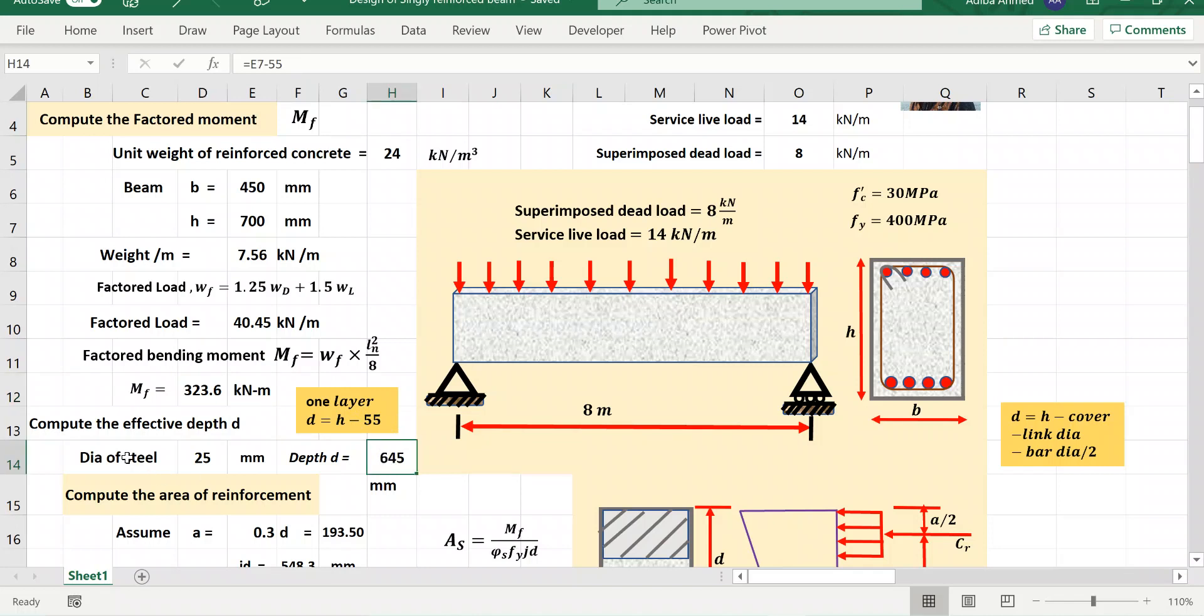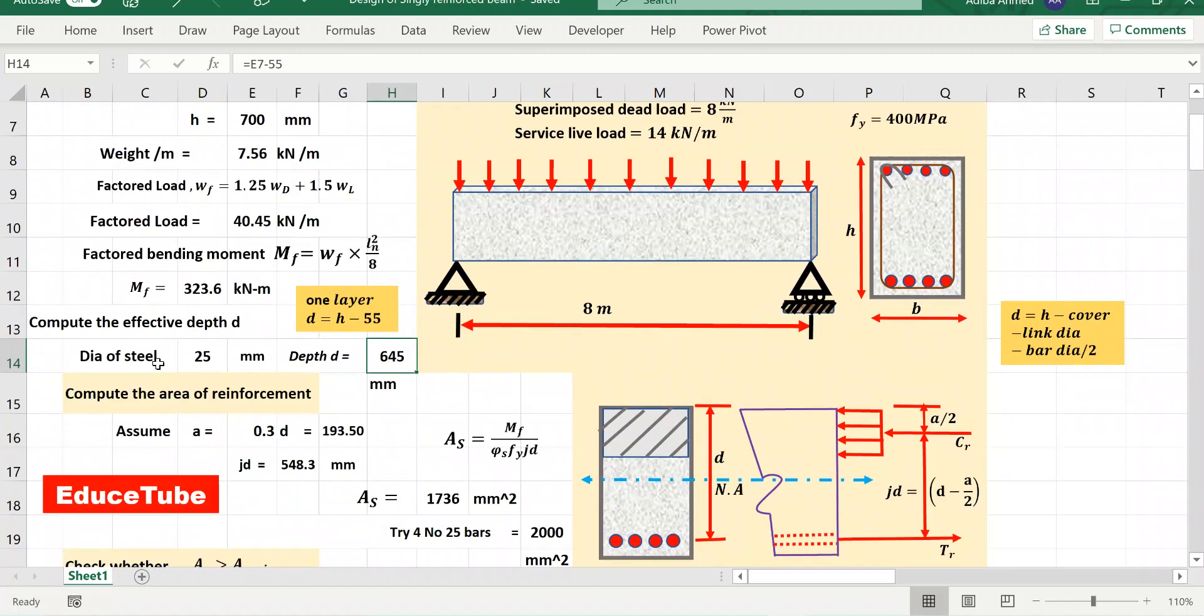Here I wrote diameter of steel say 25. I am not sure yet about the diameter because once I find the area of the steel maybe this diameter will be changed, but here I am assuming 25. Now our target to compute the area of the reinforcements.